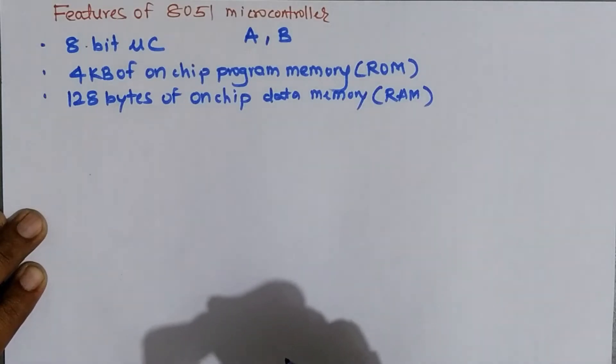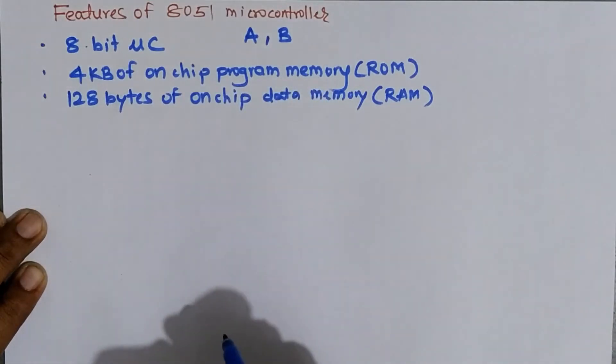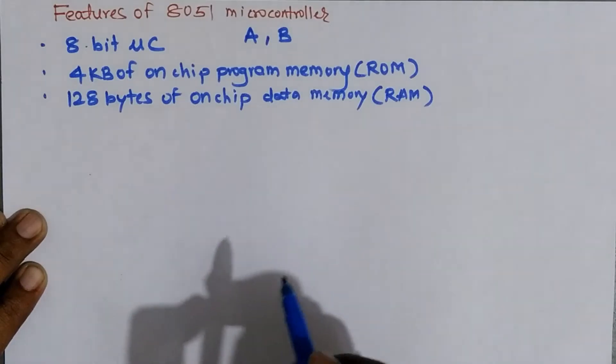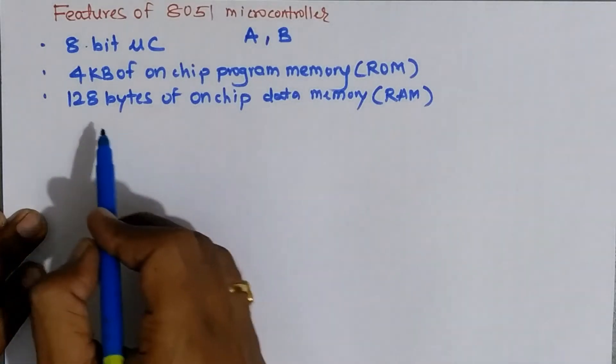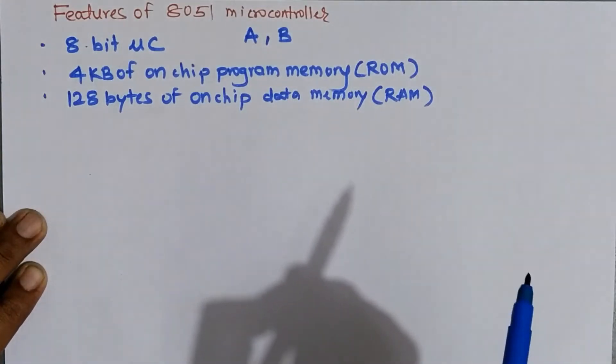So whenever we write the program, the program written by the user gets stored in this on-chip program memory, and during program execution, a temporary data is generated, intermediate result is generated, that result gets stored in 128 bytes of data memory. This memory can also be used as a stack memory.